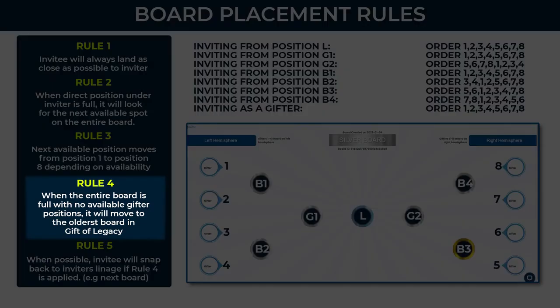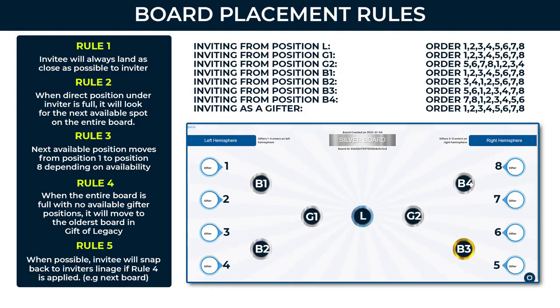Rule number 4: when the entire board is full with no available gifter positions, it will move to the oldest board in Gift of Legacy. The algorithm checks to find your inviter so you can be placed on a board. If your inviter is, for example, the legend on a board but positions 1 to 8 are all full, there is no space for you, and the system will take you to the oldest board in Gift of Legacy.